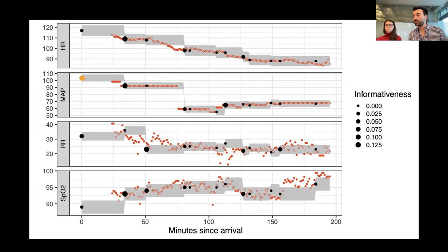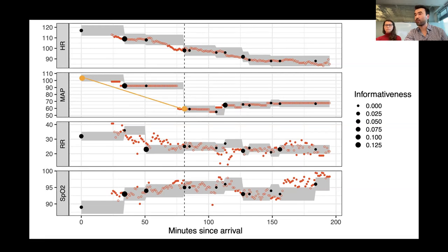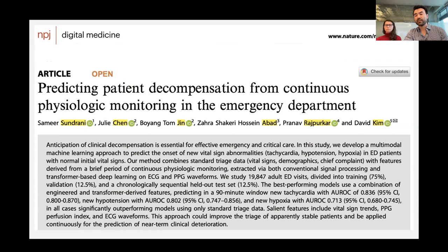This was all descriptive, and we wanted to next see whether we could predict these incipient abnormalities. This is something that happens every day — a patient will enter the emergency department looking basically well with grossly normal vital signs and within a couple of hours will get sick, sometimes needing resuscitation or critical care level interventions. Here we're focusing on one patient: initially normal blood pressure, becoming hypotensive an hour and a half later.